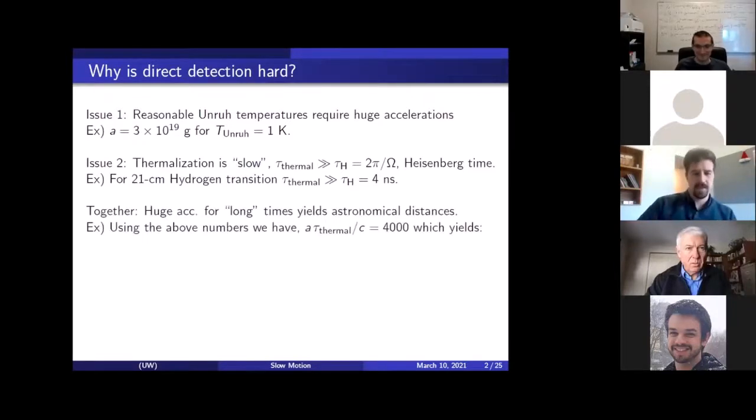And these towers mean it's the proper time of the thermometer. So this has to be larger than 2 pi times the gap, or 2 pi divided by the gap, which is the Heisenberg time. Basically, the thermometer has to take one tour around its Hilbert space or phase space before it can have a chance to even thermalize. And so for just a generic atomic transition that I picked, 21 centimeters, this Heisenberg time is 4 nanoseconds, which is fast on human timescales. But compared to this acceleration, it's very slow.